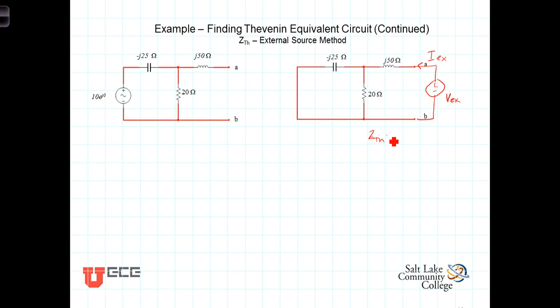Z Thevenin, then, is going to equal the ratio of VEX to IEX. This method works under any circumstances. Whether you have dependent or independent sources, this third method will work. Sometimes it gets to be algebraically a little bit cumbersome involving multiple equations and multiple unknowns, but it will always work.